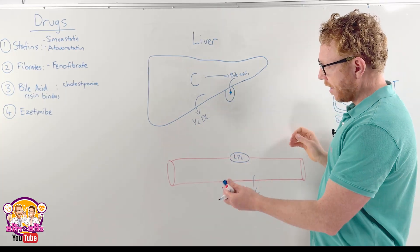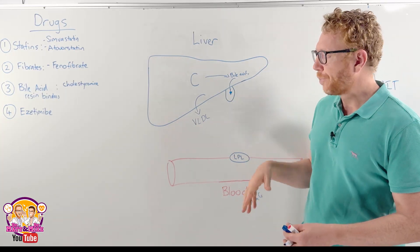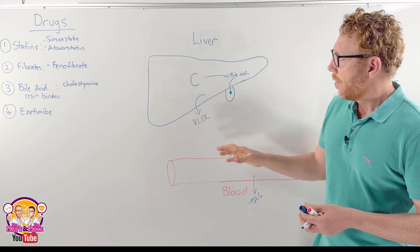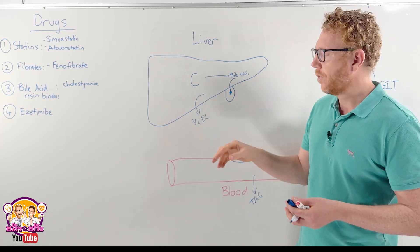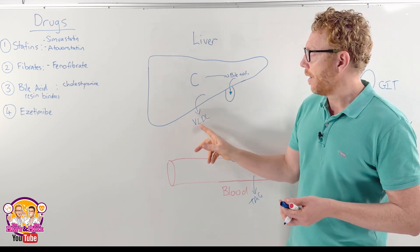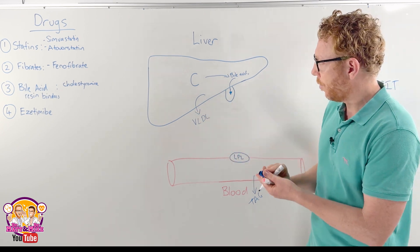So the VLDLs can be used throughout the body, it travels in the bloodstream and the triglycerides just get extracted through the use of that enzyme. The VLDLs start to shrink in size and they turn into intermediate lipoproteins which can return to the liver but in some cases will just turn into LDLs.